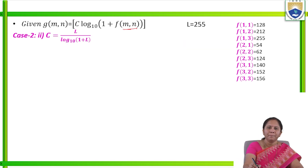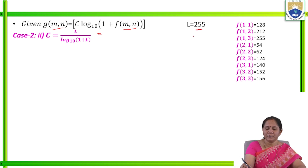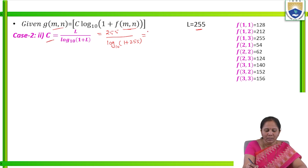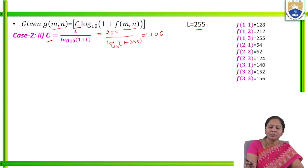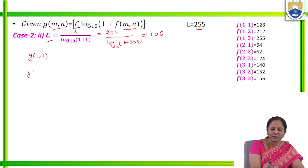Now, for the same function, when the value of c = L / log₁₀(1 + L), we have to find the new values of g(m, n). The maximum value in the matrix is 255, so L = 255. Therefore, c = 255 / log₁₀(1 + 255). Simplifying this, we get the value of c approximately equal to 106. Considering c = 106, we have to find all the values in the output image g(m, n).